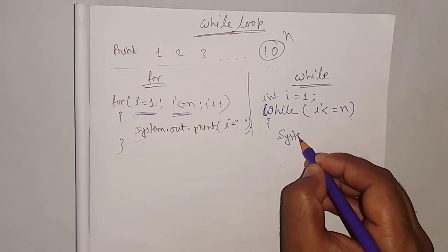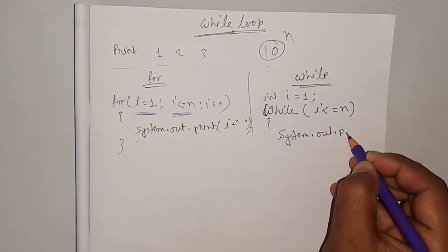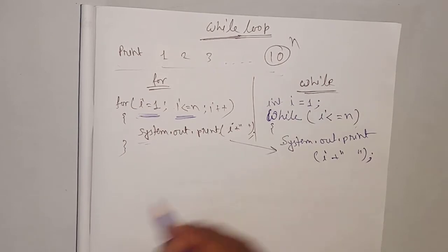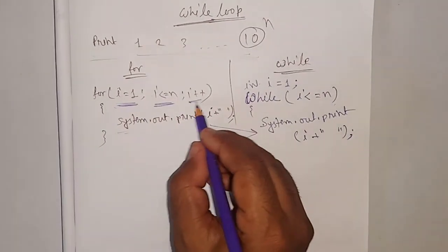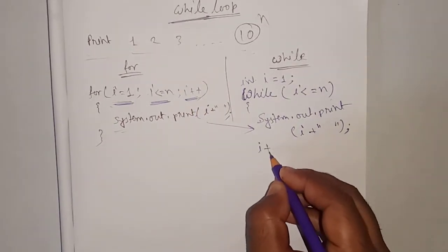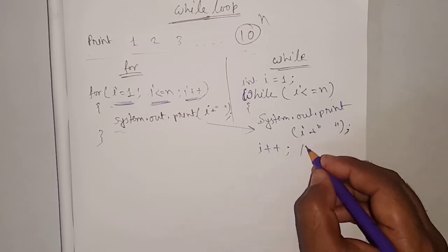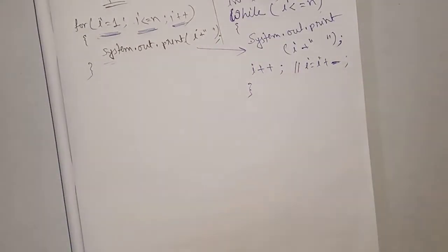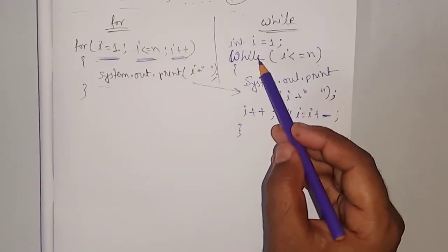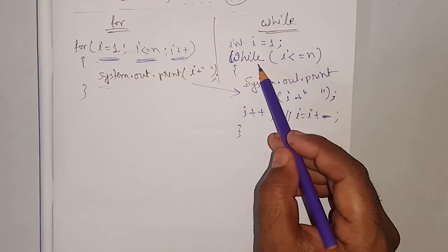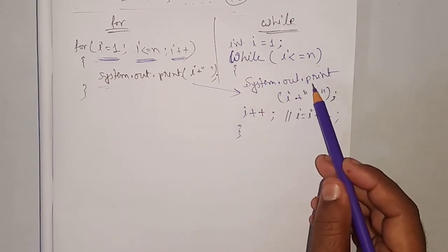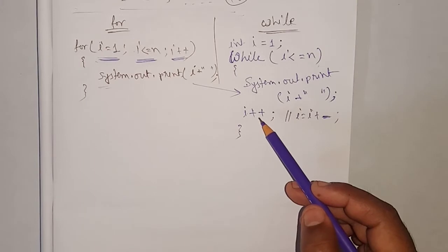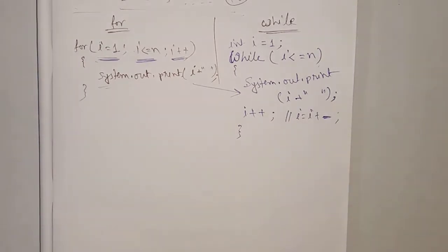Now I print the value: system.out.print i plus a blank space — the same sentence I am writing. Then we need to increase the value, so here I am writing i plus plus. If you need to increase by more, then we write i is equal to i plus your number. Then this loop is closed. So: first initialize the starting value, then write the condition within while, then print or do calculation, then increment or decrement, then close the loop. This is how we write the while loop.